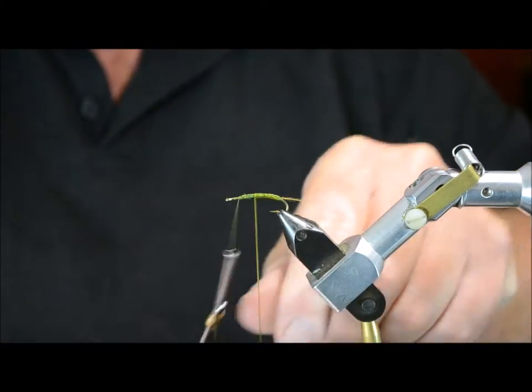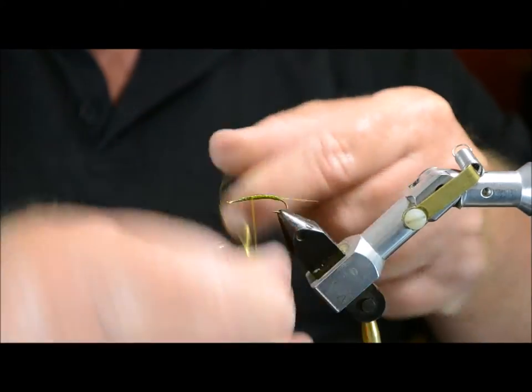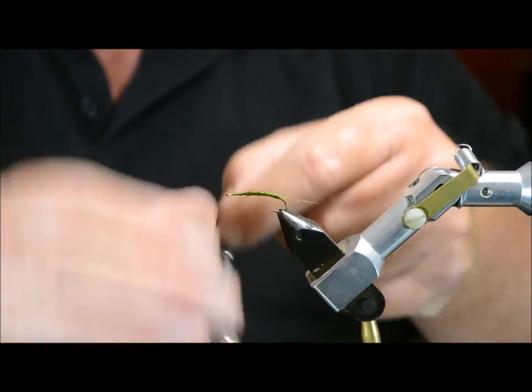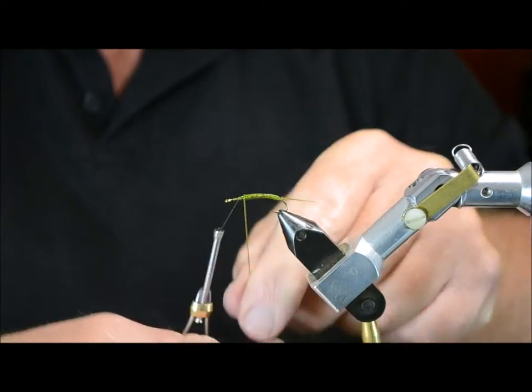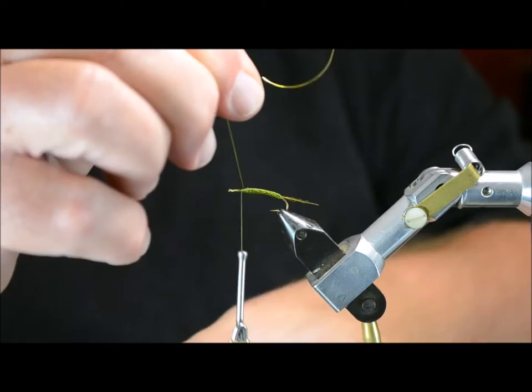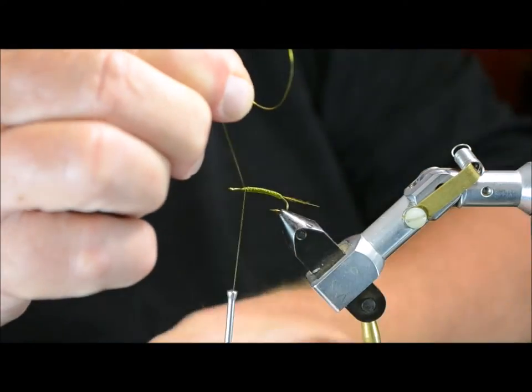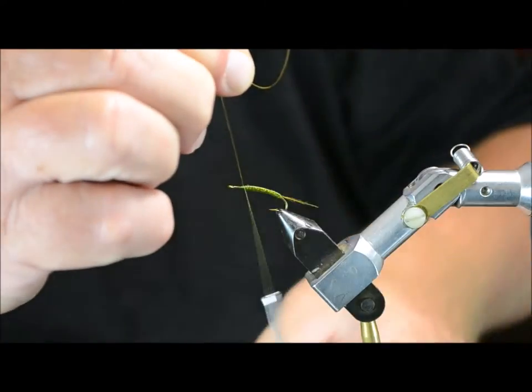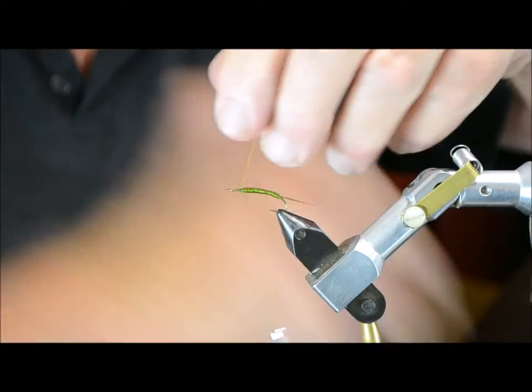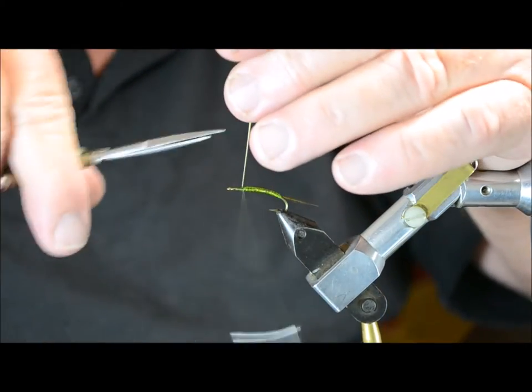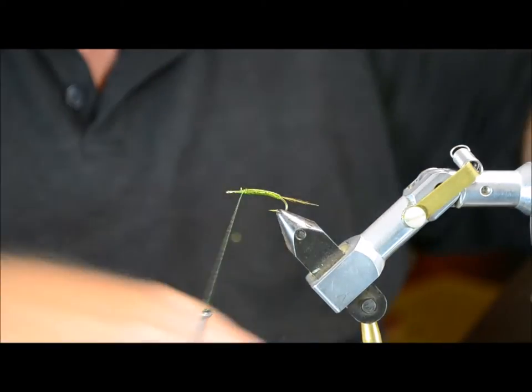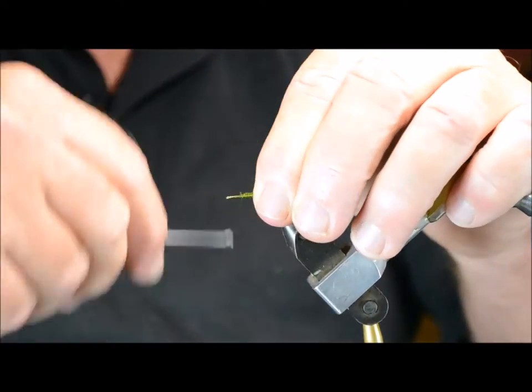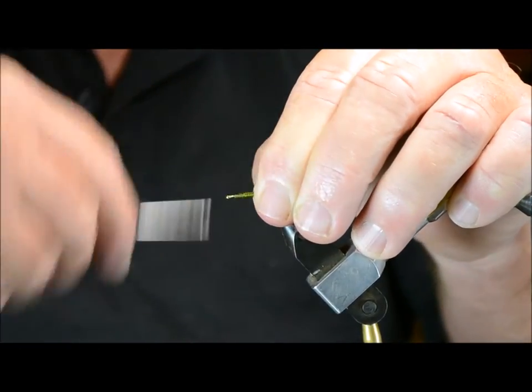When we fish these, it's usually behind a woolly bugger or a dragonfly nymph. That's it. Tie it off. Snip off the excess. And that's the body.